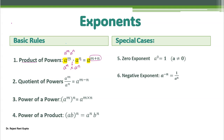Moving on to the second rule: quotient of powers — quotient means division. If we have a power m divided by a power n, again the base is the same. We write it as a to the power m minus n. Since it is division, divide becomes minus, so we subtract the powers.